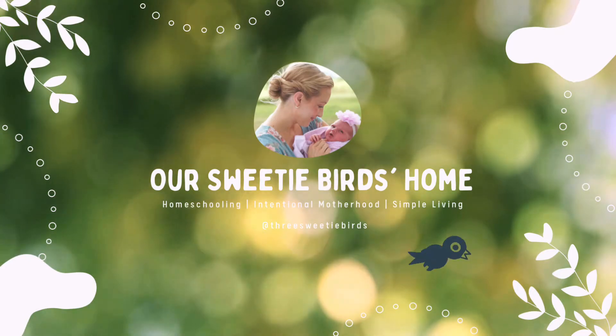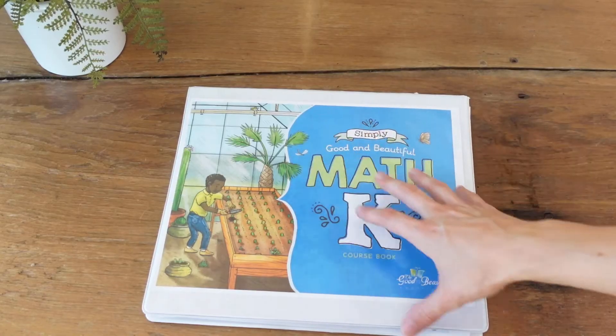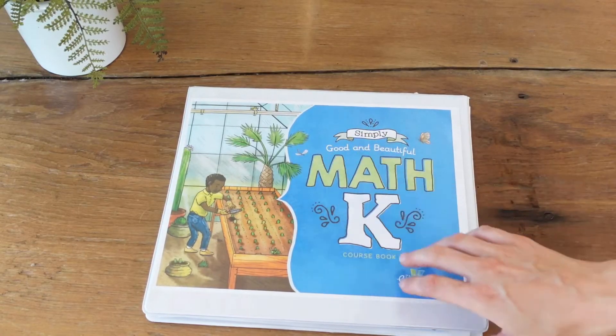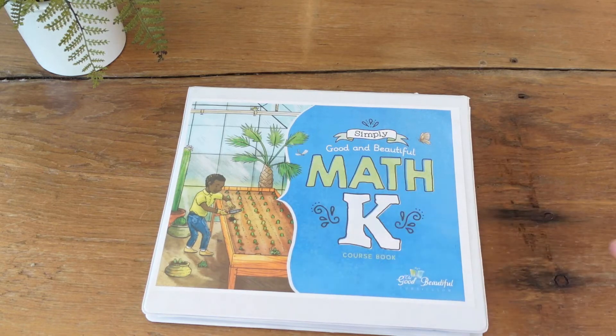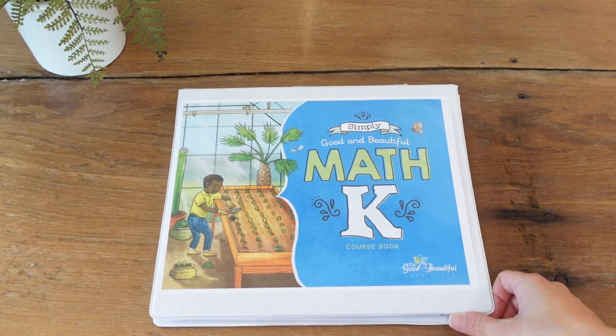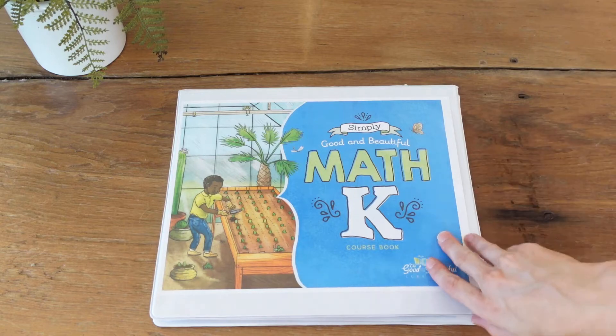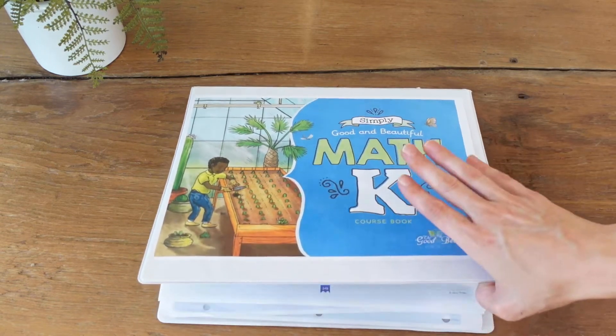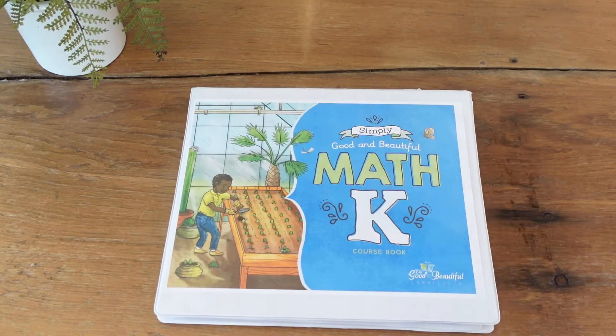But yes the Good and the Beautiful Math K. We're going to go ahead and get into the flip through so this video is not too long. I am working with one hand so I apologize if the flip through is a little shaky, but yeah let's go ahead and get into it. So I did go ahead and print this off and put it in a three ring binder. I found that just works better than having a bunch of loose leaves flying around with little people.